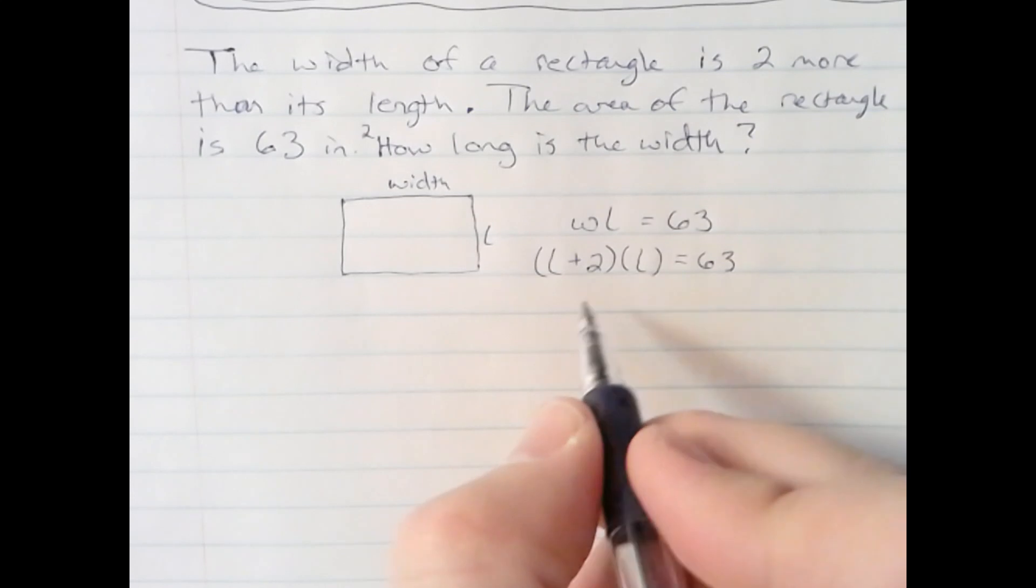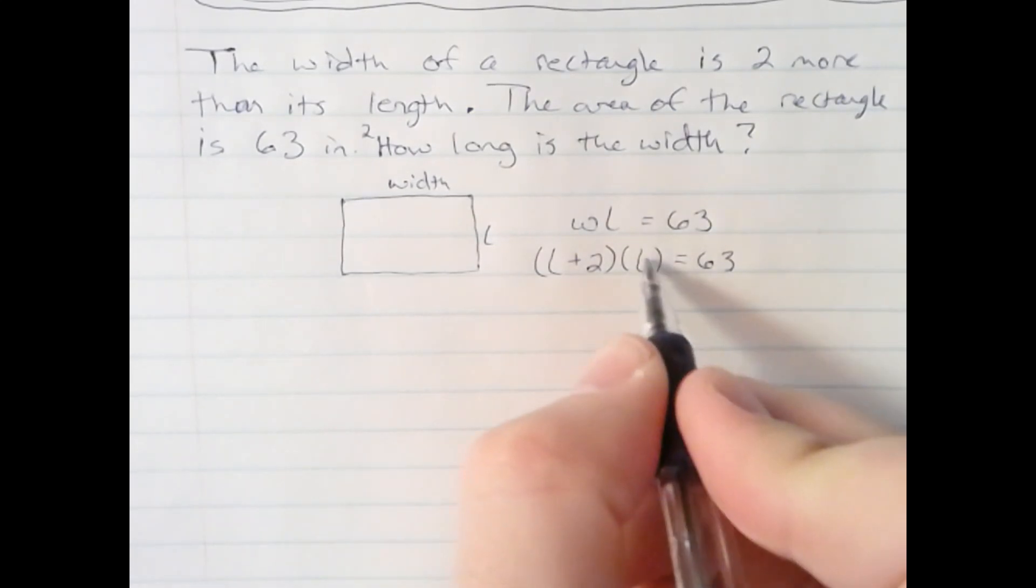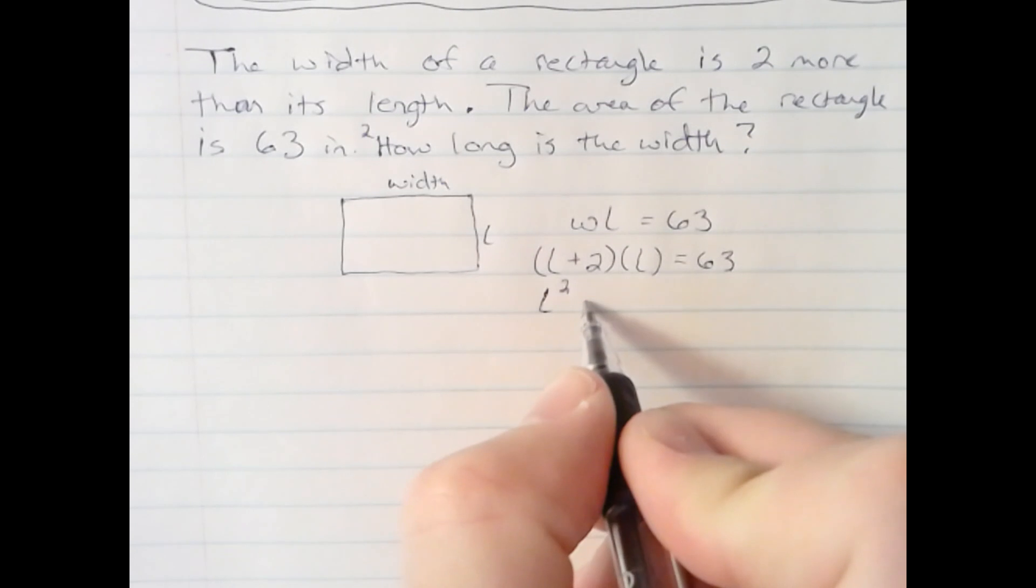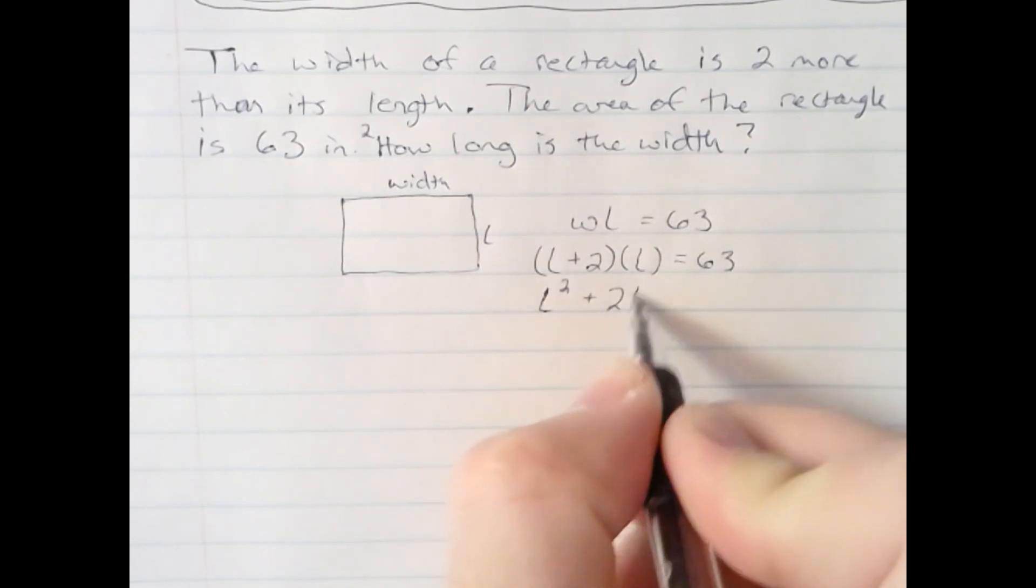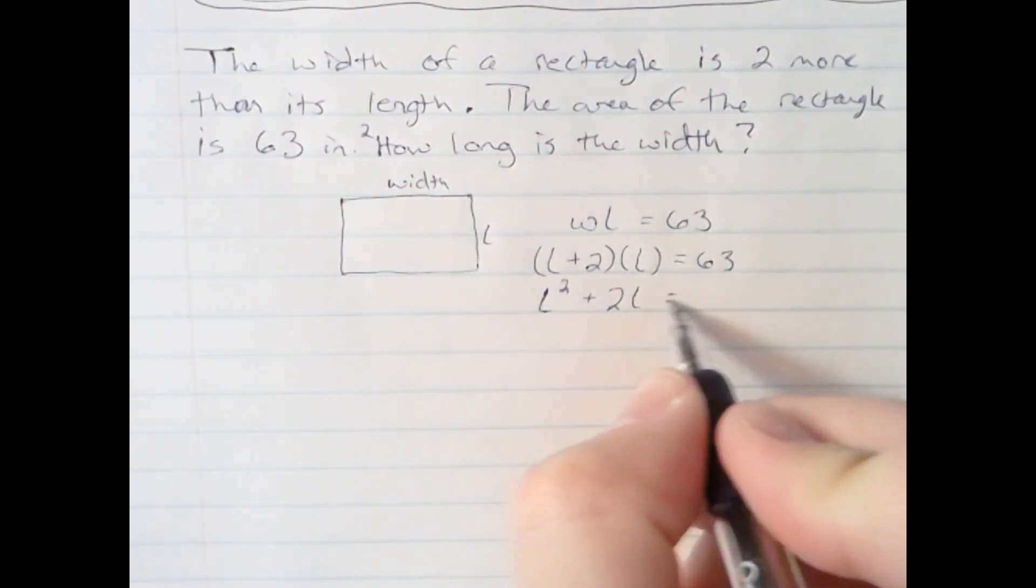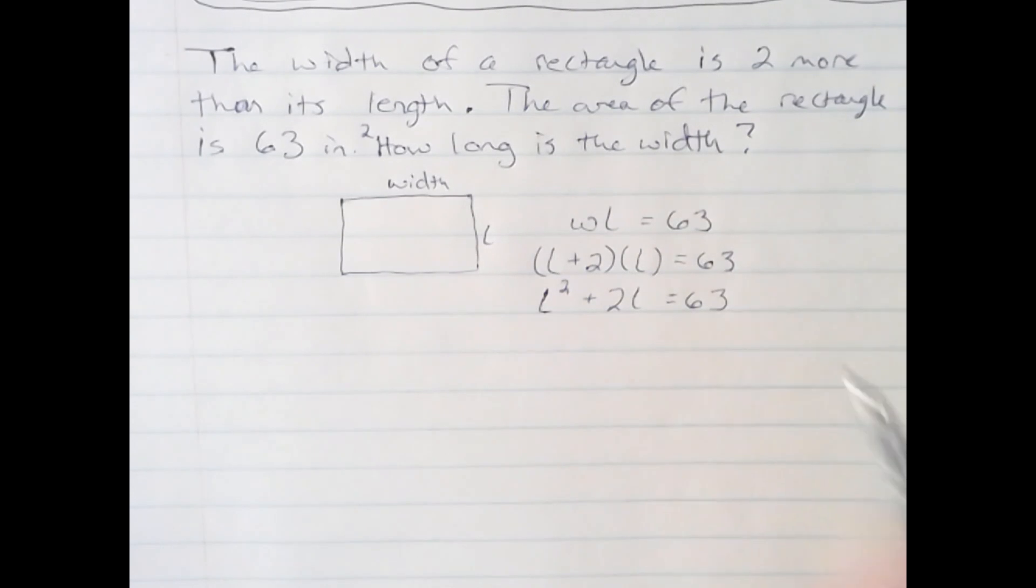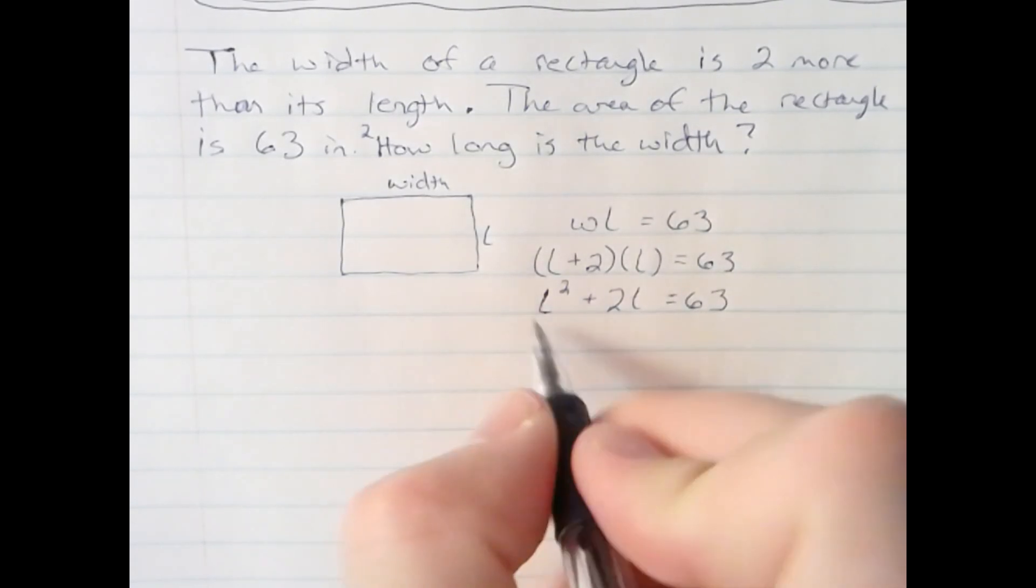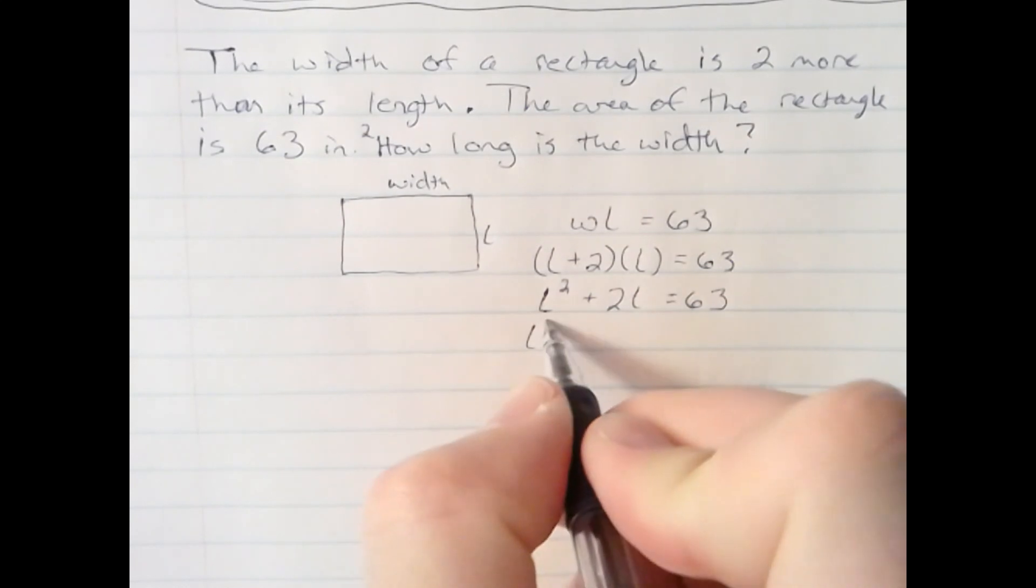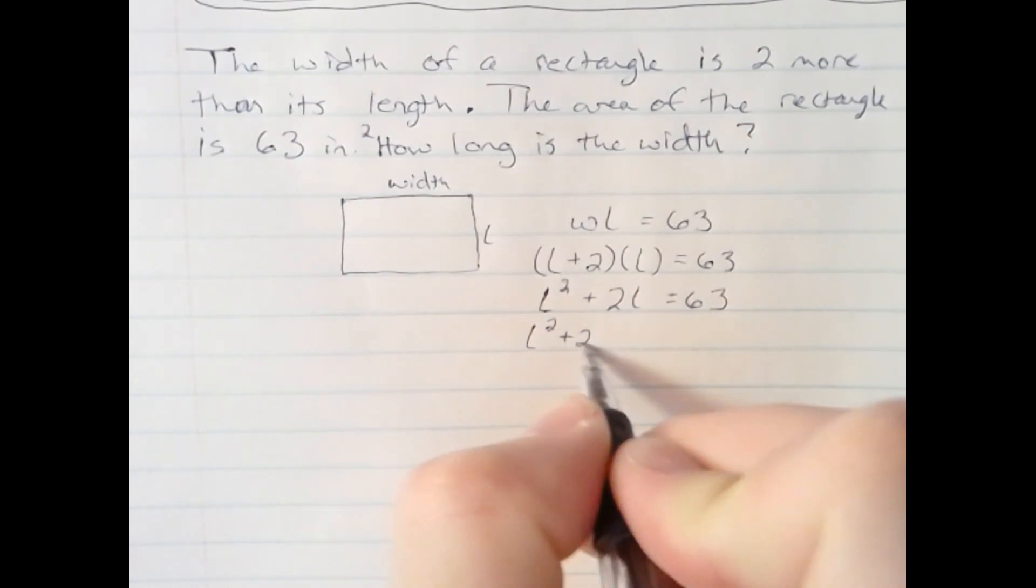What I'm going to do here is distribute the L to get L squared plus 2L, and we're equal to 63. I will move the 63 to the other side by subtracting it to give us a quadratic trinomial that I believe can be factored.